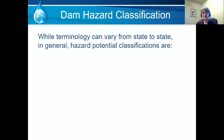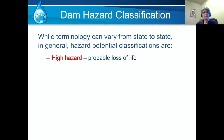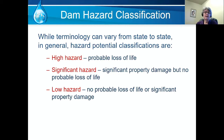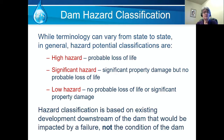In order to understand the next slide, you need to understand how dam risks are classified—this is also a key element to dam risk identification. Terminology can vary from state to state, but in general, hazard potential classifications are: high if there's a probable loss of life; significant if significant property damage is expected but no probable loss of life; and low hazard if there's no probable loss of life or probability of significant property damage. One thing to remember is that the hazard classification is based on the existing development downstream of the dam that would be impacted by the failure—not the condition of the dam—and this is very frequently confused when there is an incident at a dam in the news.